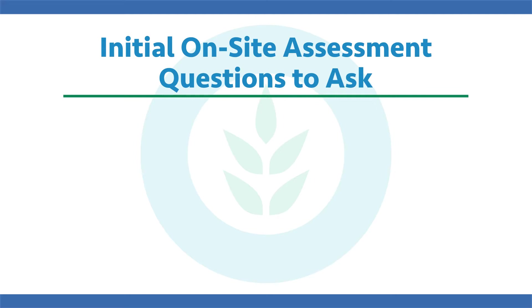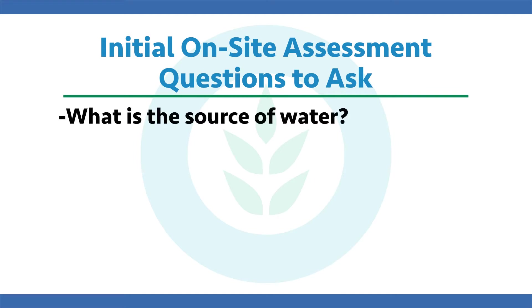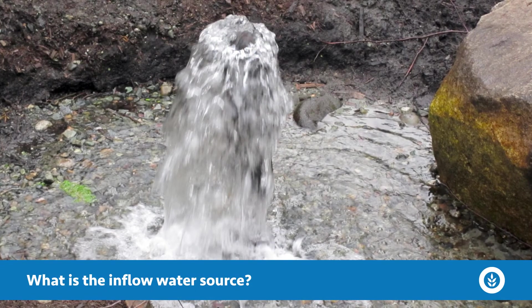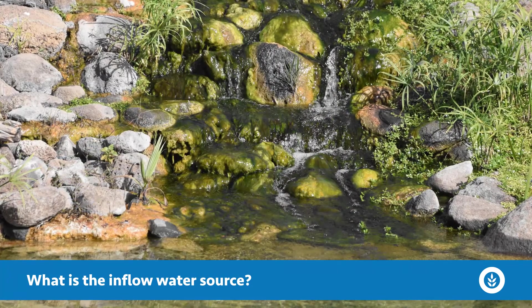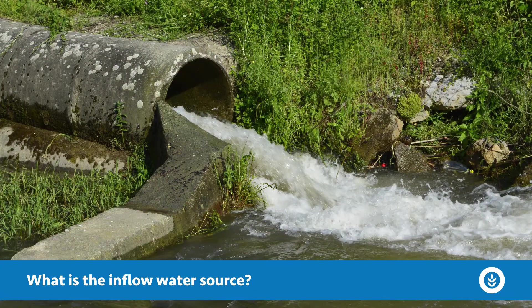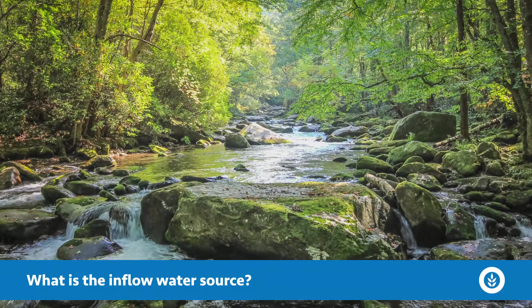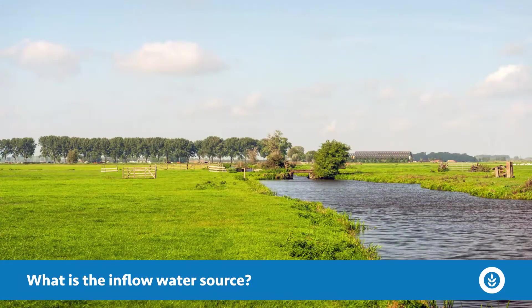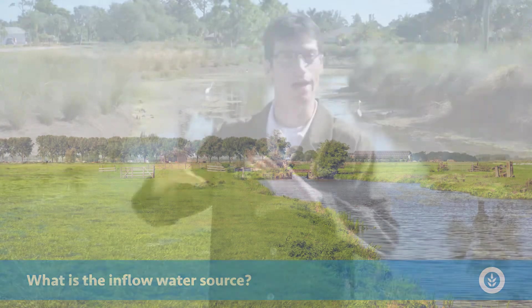The first thing I look for when I go to a site is: what is the source of water? What are those inflows coming into the system? Is it filled by well water? Is it spring fed? Is there a stream, ditch, canal, or lateral bringing water into that pond or lake system? Is the water body sitting down low, sunken in the earth, or is it sitting above everything else around it? Understanding where the water comes from to fill the pond is very important.